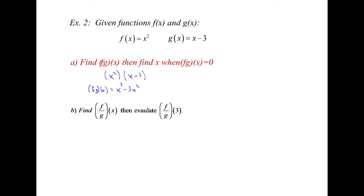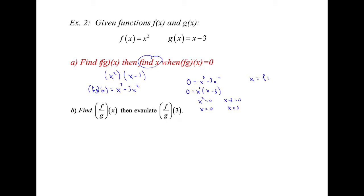Then we're going to evaluate. This one says f times g of x is equal to 0. So we plug 0 in: 0 equals x cubed minus 3x squared. Now we'll have to solve this. We can factor out an x squared, which leaves us with x squared times (x minus 3). So x squared could equal 0, meaning x equals 0, and x minus 3 could equal 0, so x could equal 3. So x equals 0 or 3.